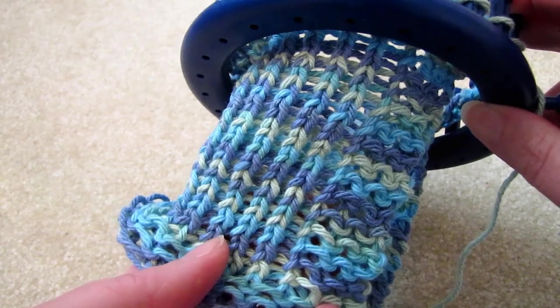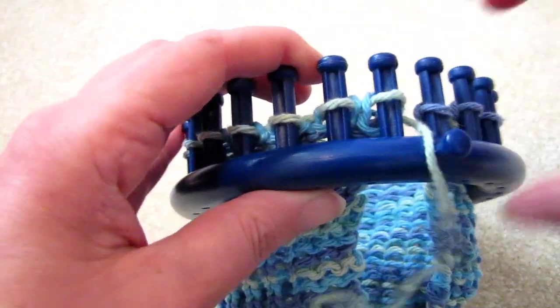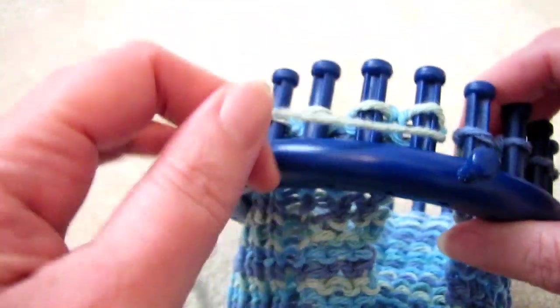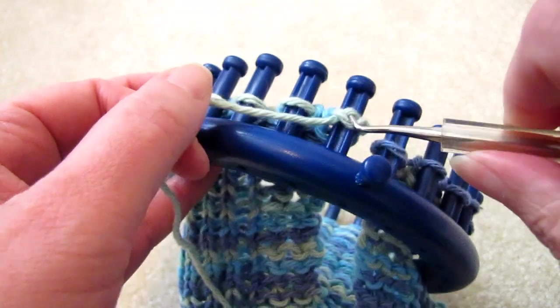Isn't that coming along nicely? We've done about 42 rows, so let's start with the border, which is a whole row of purl.